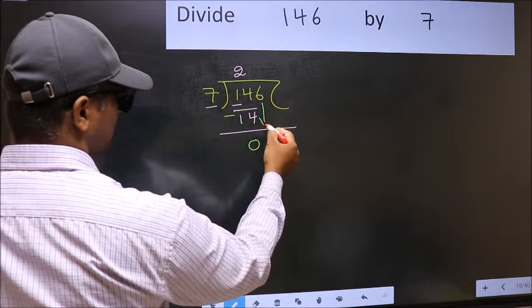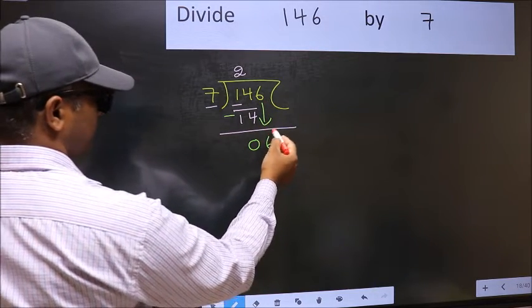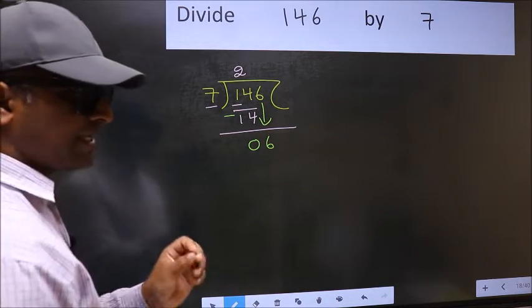After this, bring down the next number. So 6 comes down. After this step, the mistake happens.